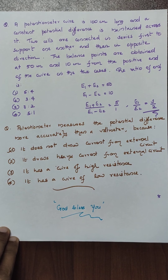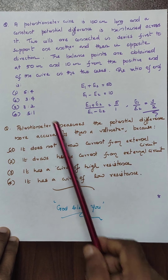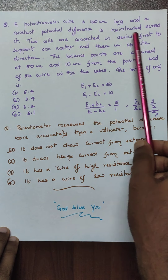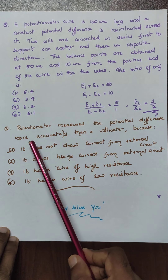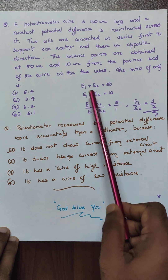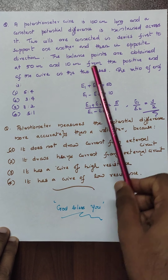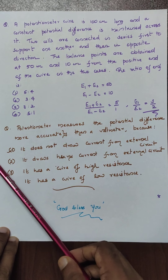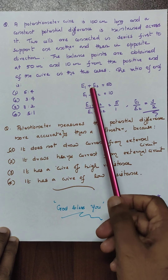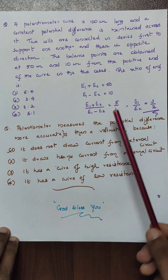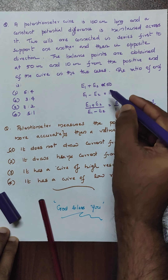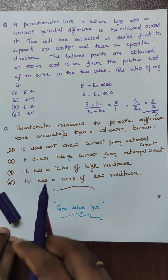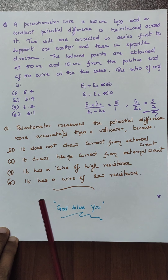A potentiometer wire is 100 cm long and a constant potential difference is maintained across it. Two cells are connected in series: first to support one another, then in opposite direction — so first E1 plus E2 and then E1 minus E2. The balance lengths are 50 and 10 respectively. So E1 plus E2 is proportional to 50 and E1 minus E2 is proportional to 10. Taking the ratio, you get E1 by E2 equal to 3 by 2.